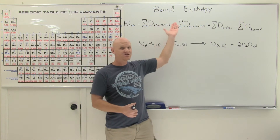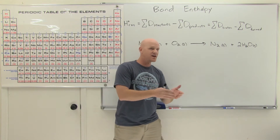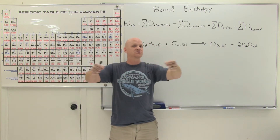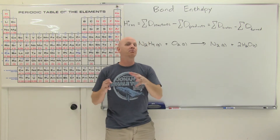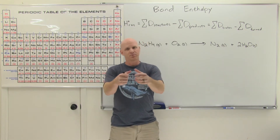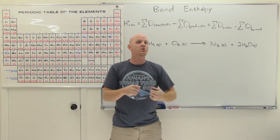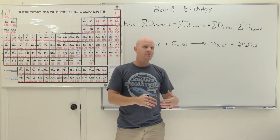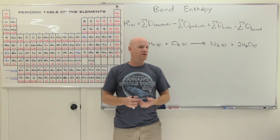Bond enthalpy is the energy required to break a bond — that's why it's also called bond dissociation energy, the energy for two atoms to dissociate apart from each other. Bond breaking is endothermic; it costs energy. So if you pull atoms apart and that costs energy, then when those atoms come together and form a bond it releases energy. Bond making or bond forming is exothermic.